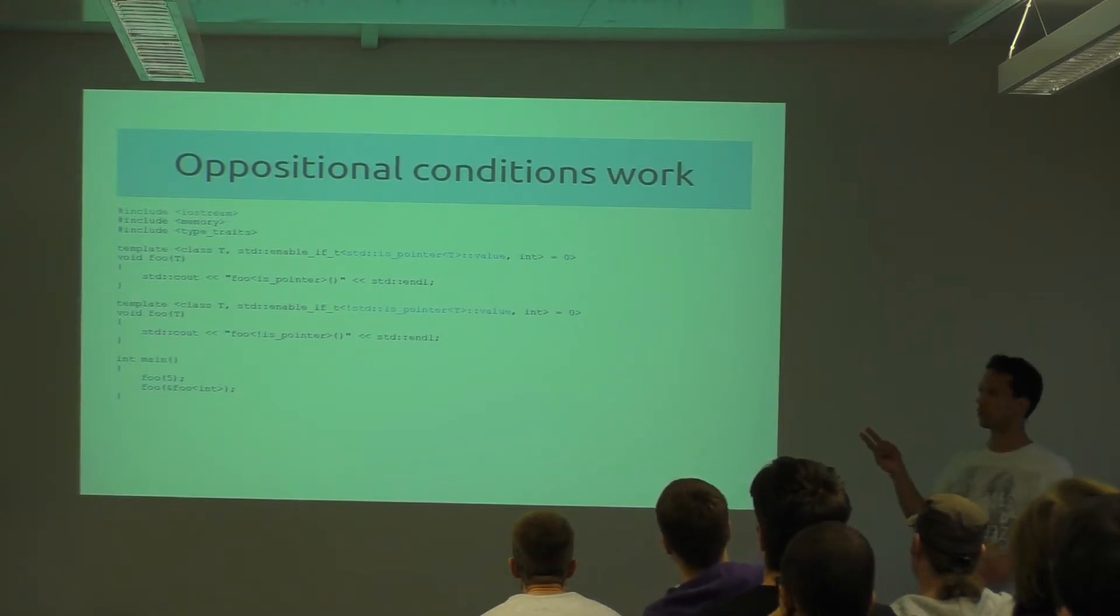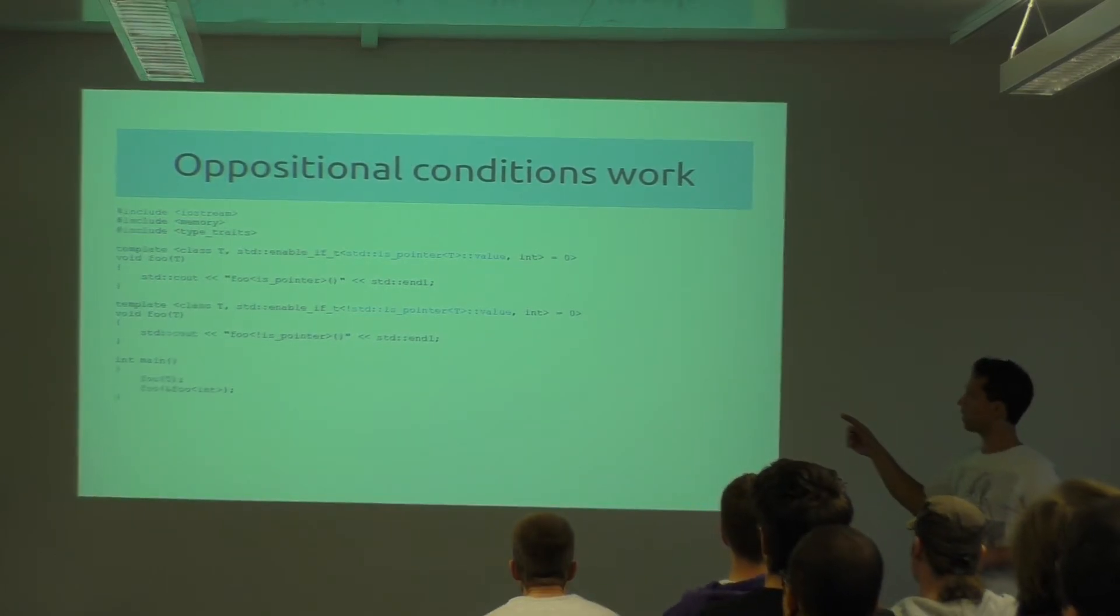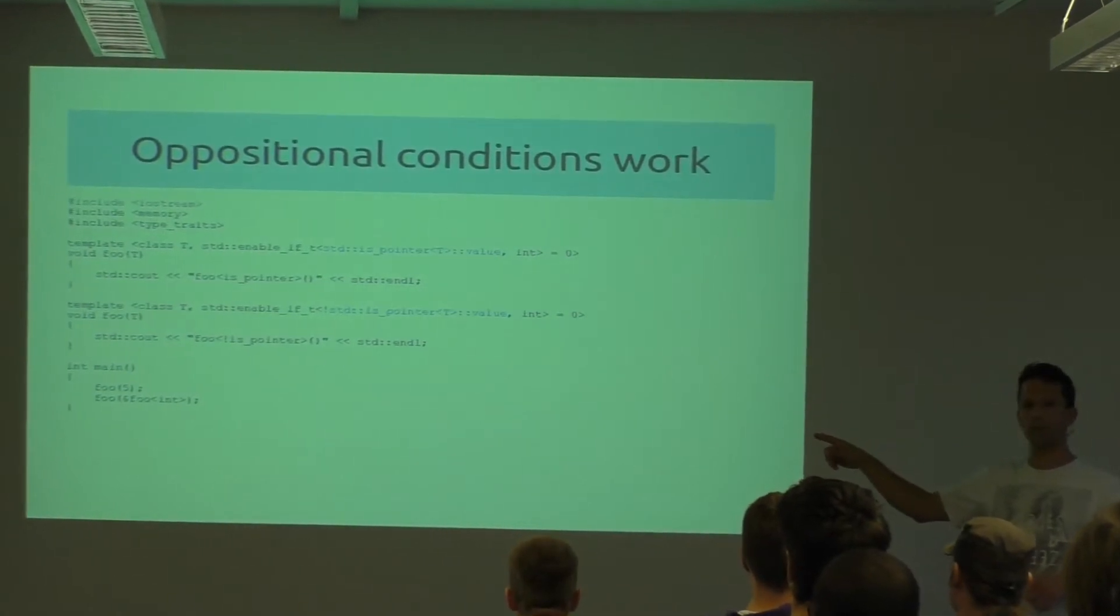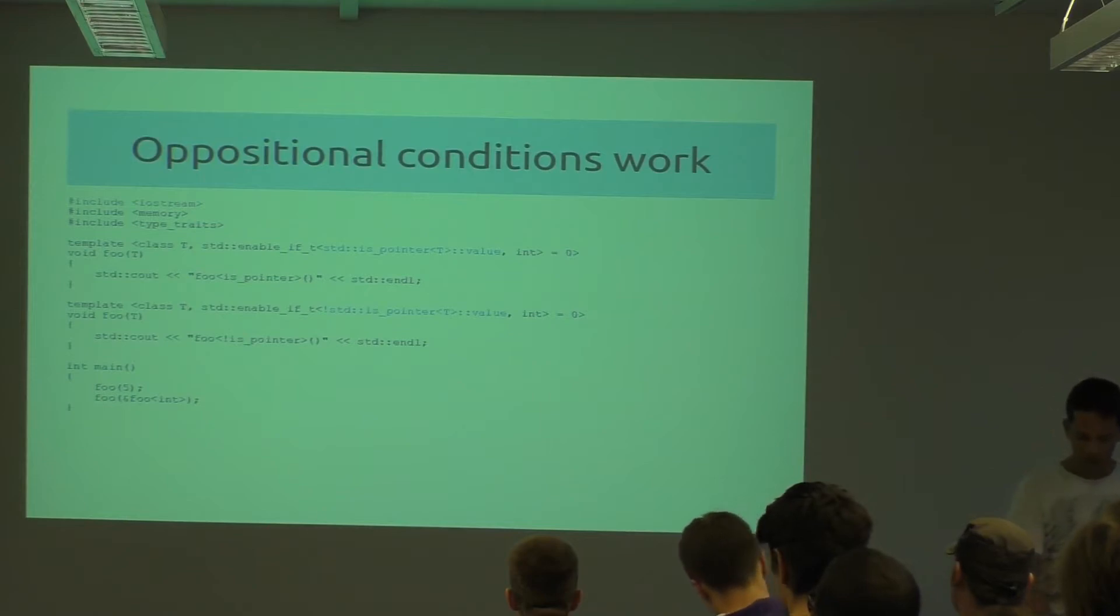First piece of code: we got two overloads, more or less like Roland presented to us. We got is_pointer and not is_pointer, and we try to call this with a five and with a pointer to a function. As the header says, this works, no problem.